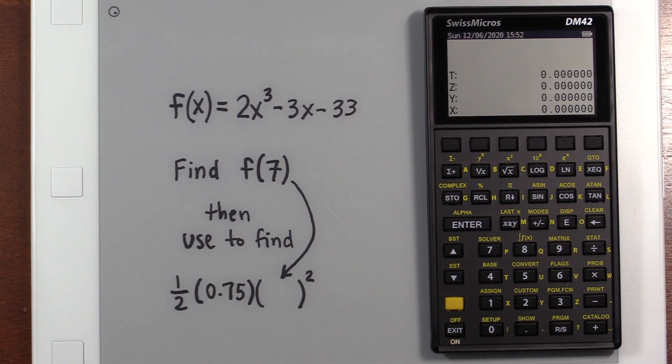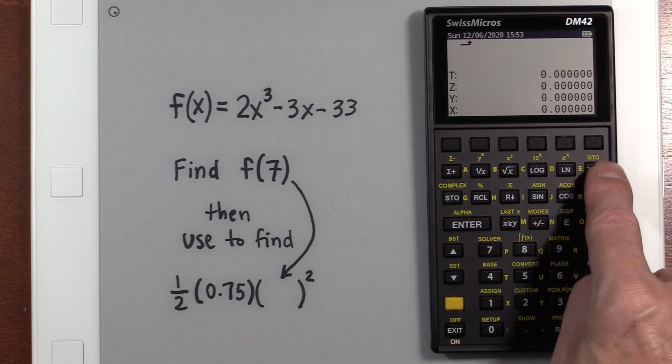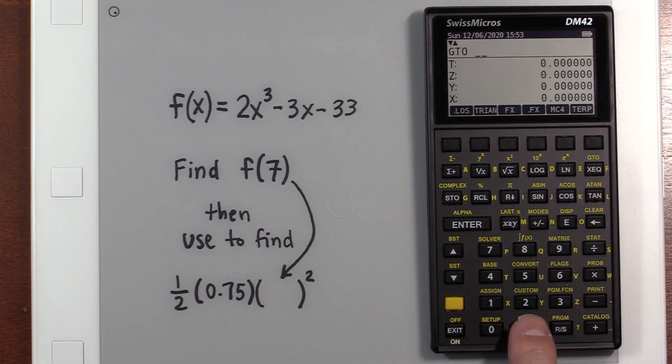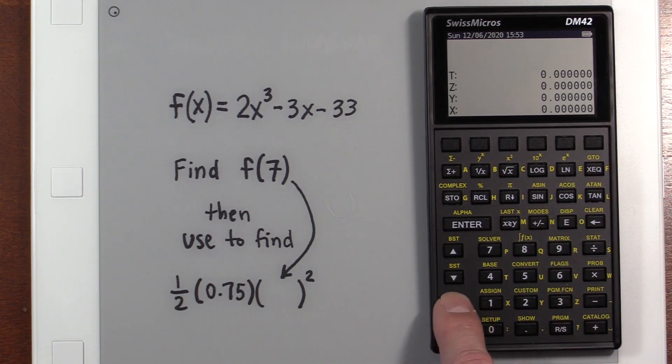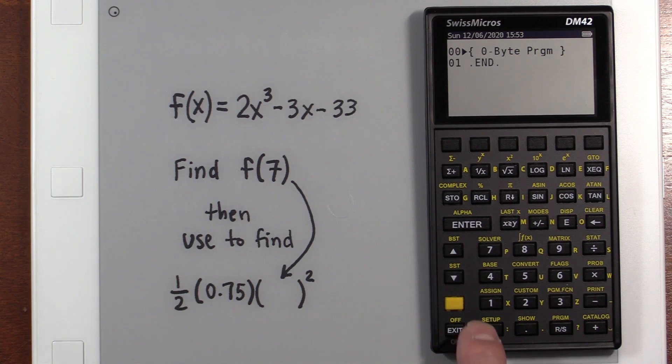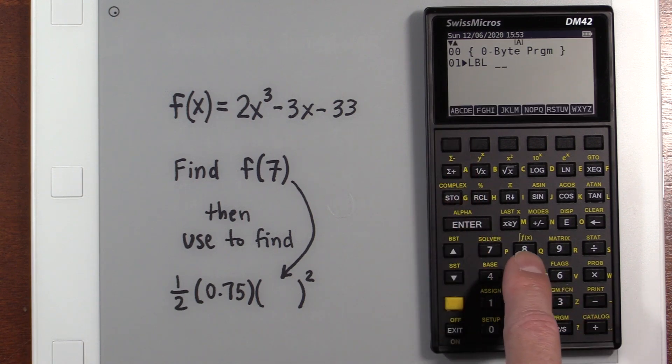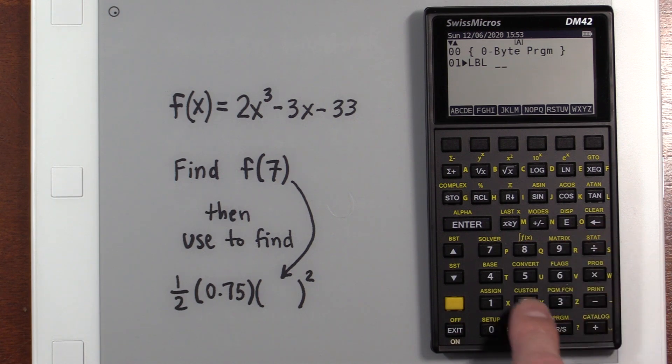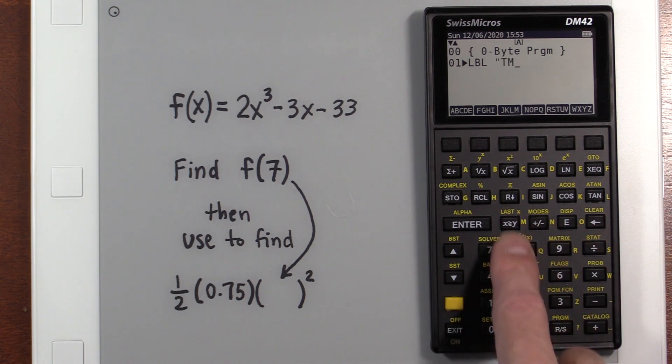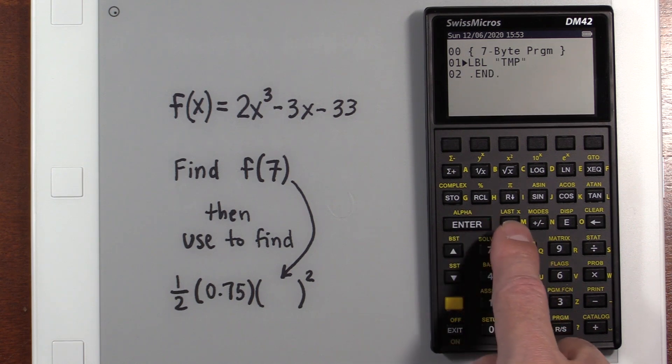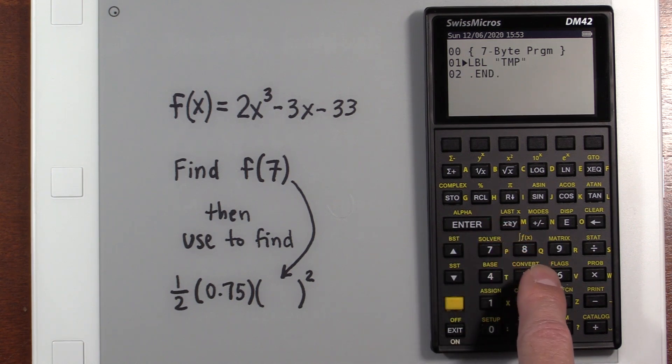All right, let's say we wanted to solve this. And we wanted to figure out the value of the function when X is seven. And granted, you could just plug a seven in and type it in. But let's assume we were going to do a bunch of different values. So the way you go about this is you actually make a little program. So when you want a new program, you just hit the period twice. And then I go into the program menu. And I got to give it a name. Oops. Still learning some of this. I'm going to go into label. And I'm going to call this, let's just call it temp. T-M-P.